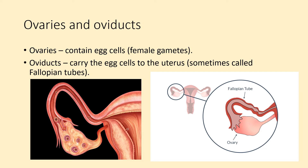Ovaries and oviducts. The ovaries contain egg cells — the female gametes — and the oviducts carry the egg cells to the uterus. Sometimes you'll see oviducts referred to as fallopian tubes. Here's the ovary on the diagram, anchored to the side of the uterus. The oviduct — 'duct' just means tube — is the tube that carries the eggs from the ovary to the uterus.